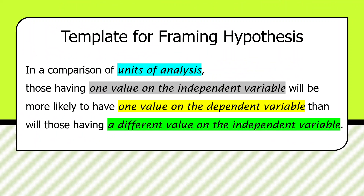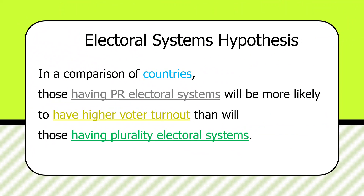As we move across values of the independent variable from one value to another, we're proposing there's going to be a change in one value of the dependent variable. For example, in a comparison of countries, those having PR electoral systems — proportional representation — will be more likely to have higher voter turnout than those having plurality electoral systems. The two values of the independent variable are PR systems versus plurality systems, and the dependent variable value cited is higher voter turnout.